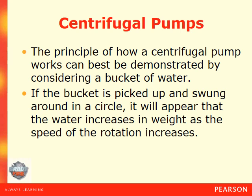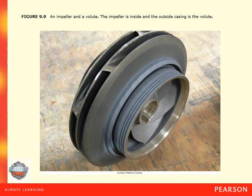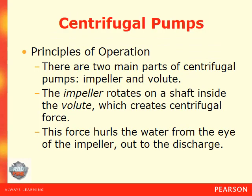The principles of how a centrifugal pump works can best be demonstrated by considering a bucket of water. If the bucket is picked up and swung around in a circle, it will appear that the water increases in weight as the speed of rotation increases. By poking a hole in the bottom of the bucket, the faster it is swung, the greater the discharge and the farther the water will be discharged — this force is referred to as centrifugal force. There are two main parts of a centrifugal pump: the impeller and the volute. The impeller rotates on a shaft inside the volute, creating centrifugal force that hurls water from the eye of the impeller out to the discharge.